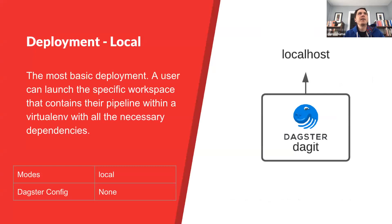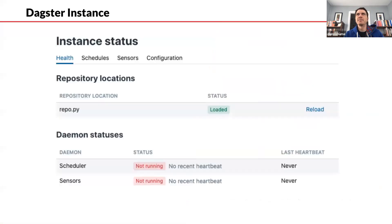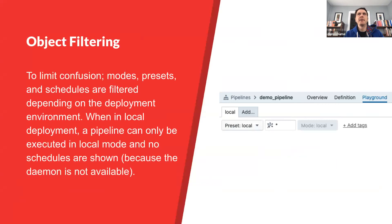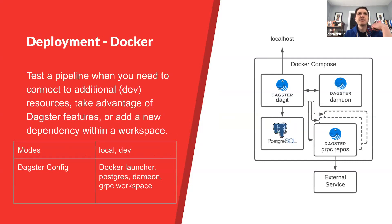Our local deployment is very much just running Dagster against a specific repo. The only modes available are local, the Dagster configuration is none because there are no additional dependencies, and for object filtering you only have access to local mode and presets — no schedules available.